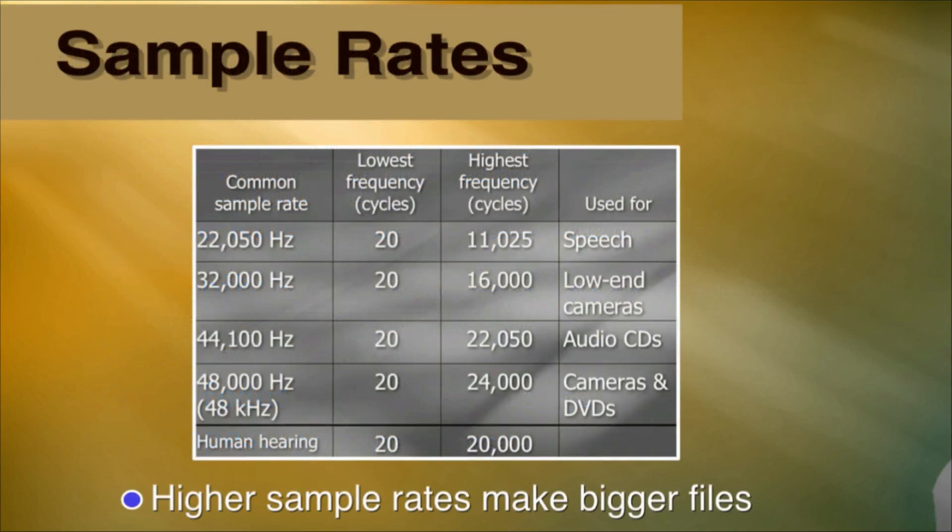Let's talk about sample rates for a second. As you can see, there are about four common sample rates: 22 kHz, 32 kHz, 48 kHz, and 44.1 kHz. I recommend 48 whenever possible — it gives you the greatest range. The 22 is usually used for speech, the 32 is usually used for low-end cameras, 44.1 is used on audio CDs and cameras, and DVDs are at about 48,000.